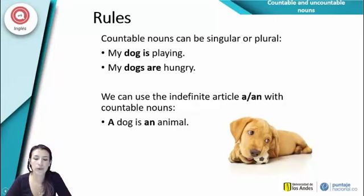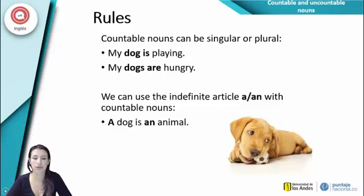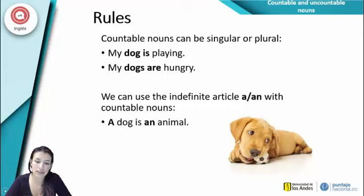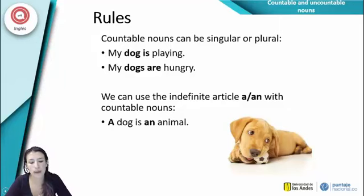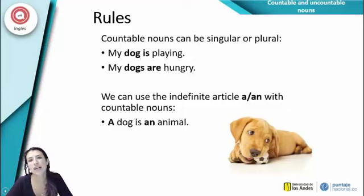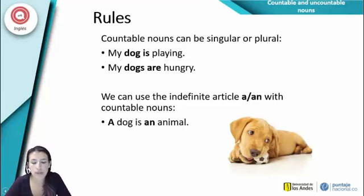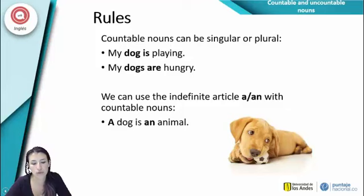Countable nouns can be singular or plural: 'My dog is playing' or 'My dogs are hungry.' We can use the indefinite article 'a' or 'an' with countable nouns — for example, 'A dog is an animal.' So the rules for countable nouns: they can be singular or plural, no importa, porque es contable — puedo contar cuántos perros hay.